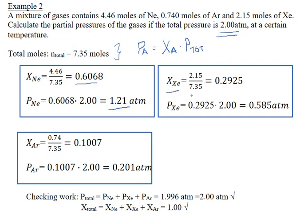We can do the same for xenon and argon — finding the partial pressure by first calculating the mole fraction and then multiplying by the total pressure. We could have subtracted from the total pressure once we knew two of the partial pressures, but calculating each from scratch allows us to check our work. We verify by summing the calculated partial pressures to confirm they equal the total pressure of 2 atmospheres, and by summing the mole fractions to confirm they total 1.